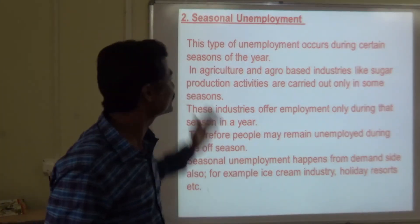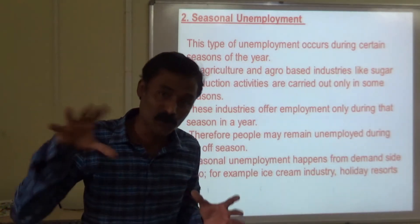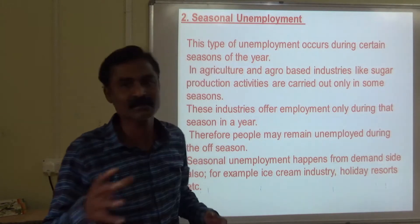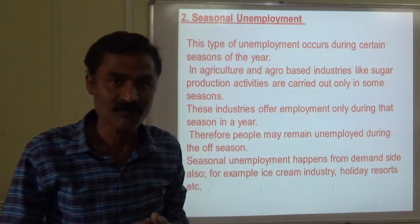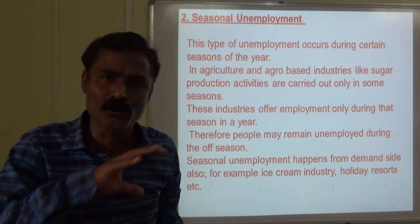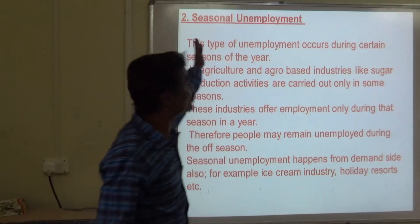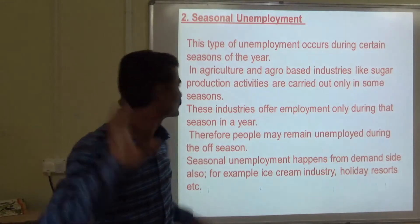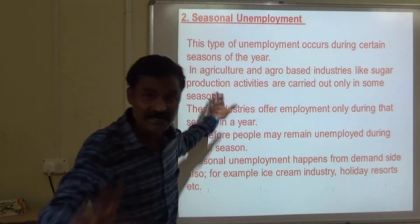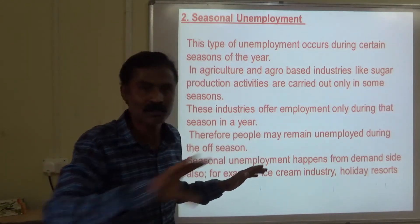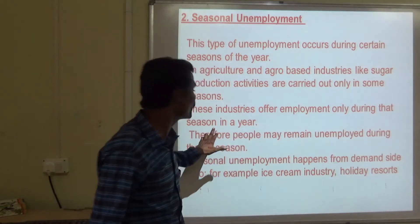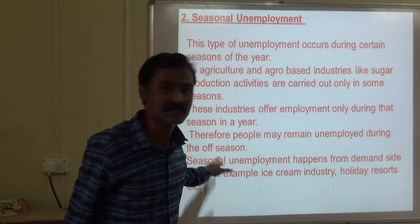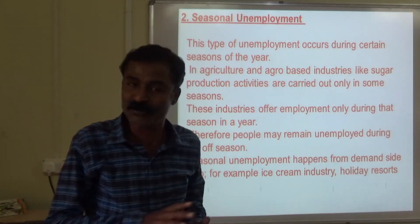Next is seasonal unemployment. During a particular period of the year, there would not be any employment. This type of unemployment occurs during certain seasons. For example, during January we do harvesting, and in February and March we do not grow any crops — that period is called seasonal unemployment. In agriculture and agro-based industries like sugar production, activities are carried out only in some seasons, so employment is available only during sugarcane production. Apart from that, people remain unemployed during the off-season.